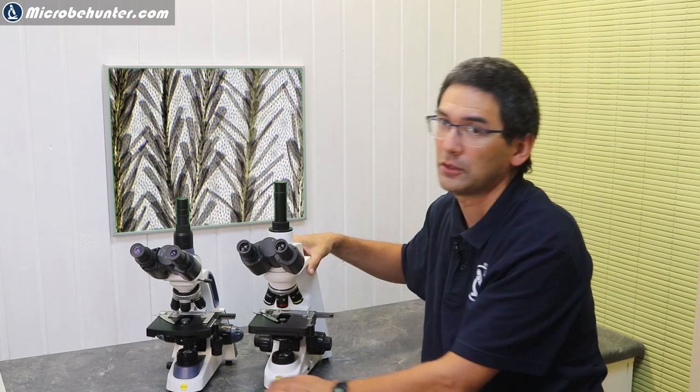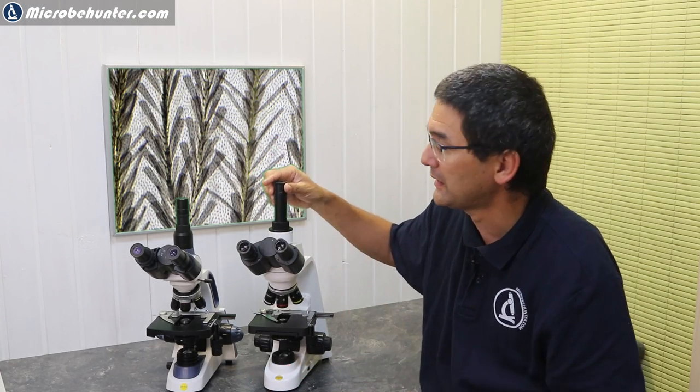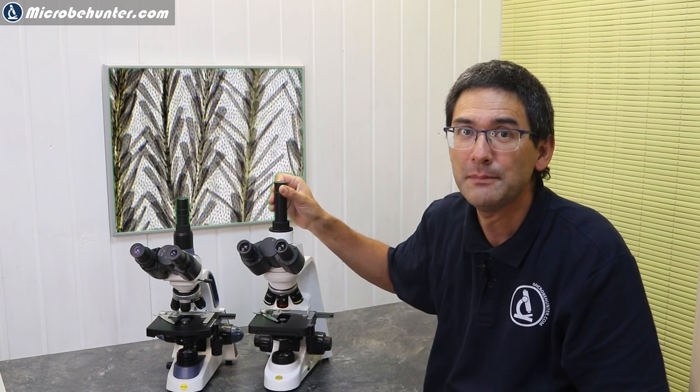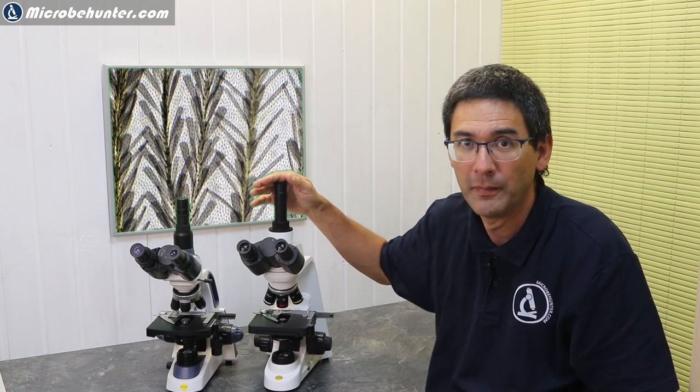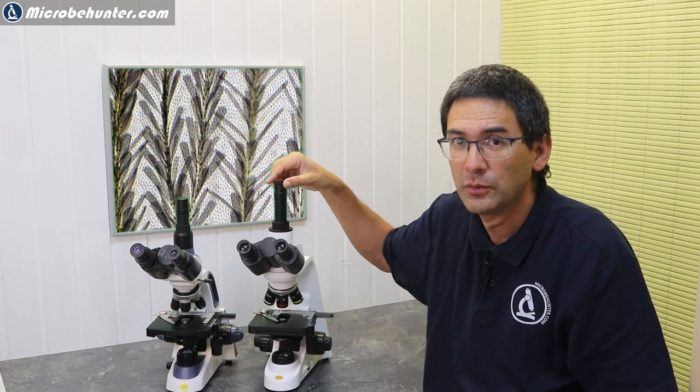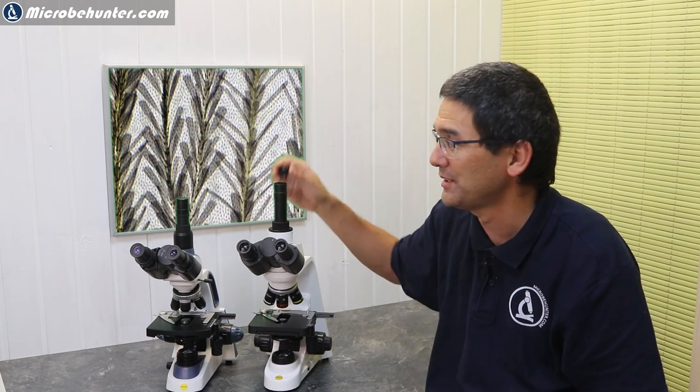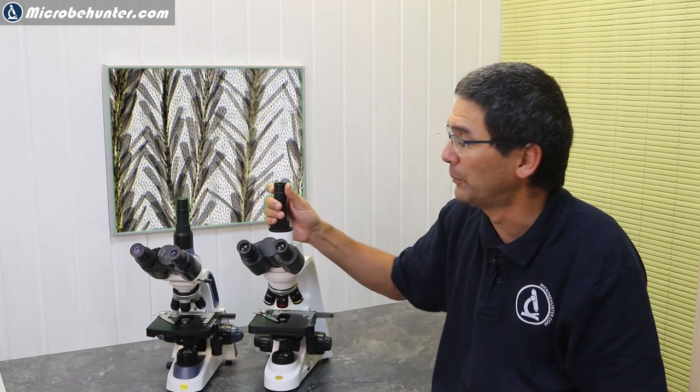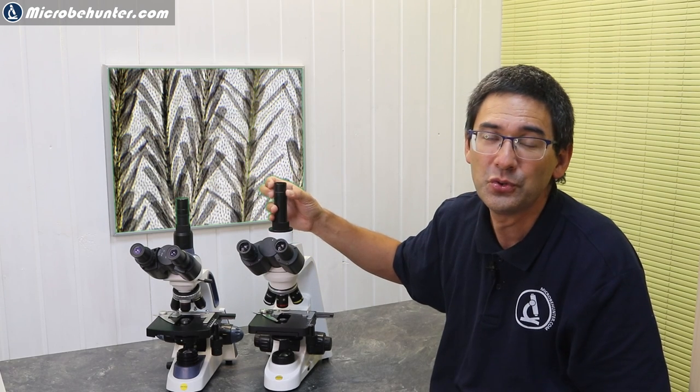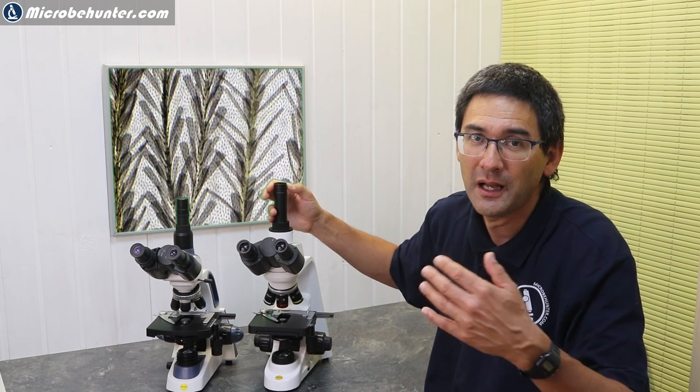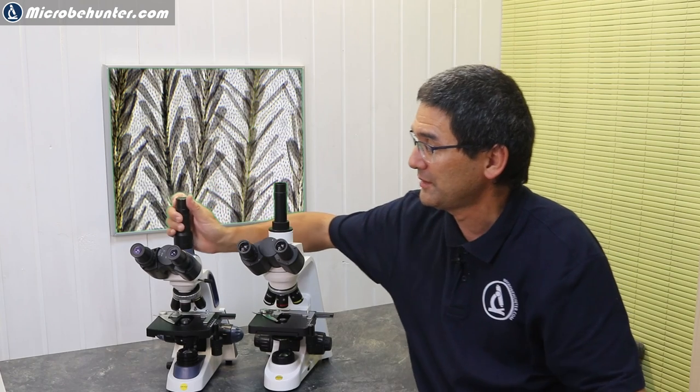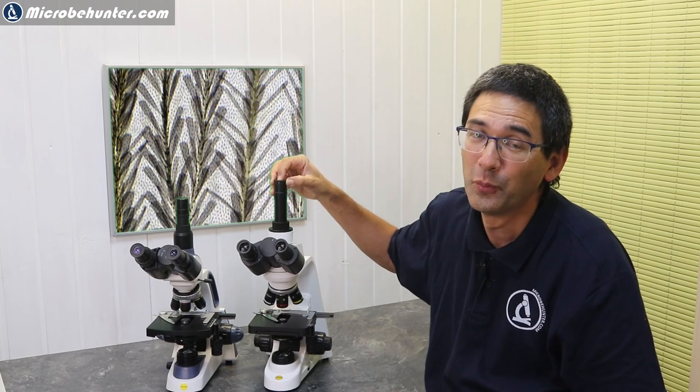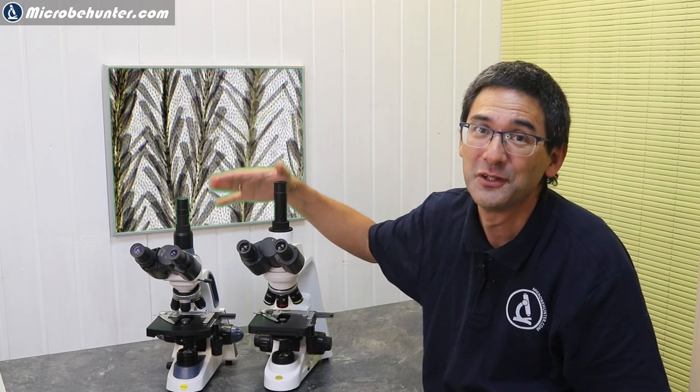I already talked about the photo tube, but there's one thing that I still want to mention here, and that is the possibility to connect a C-mounted camera to both of them. Normally you can of course always connect so-called eyepiece cameras—this is the standard. But here at the top you can also take the top off, and this allows you to connect a C-mounted camera. Both of them allow you to do this. This is something I wanted to mention because not every microscope with a trinocular head gives you this possibility.